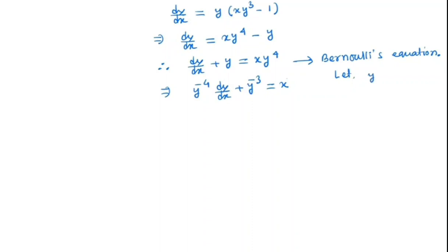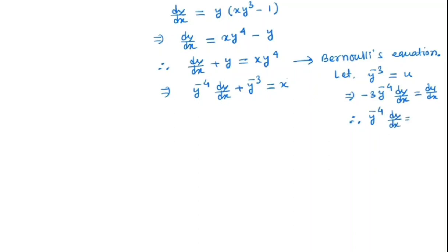Let y to the power minus 3 equal u, so that implies minus 3 times y to the power minus 4 times dy/dx equals du/dx. Therefore y to the power minus 4 times dy/dx equals minus one-third du/dx.